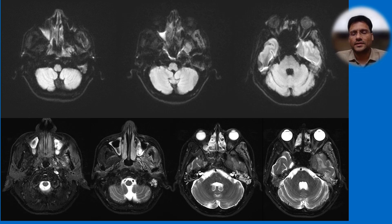Hi, hello, welcome back. Let us discuss an interesting case of an elderly male who presented with visual loss. An MRI brain was ordered to evaluate the cause of his vision loss. The upper row images are diffusion-weighted, the lower row images are T2-weighted. Please write down your findings — the visual loss was on the left side.